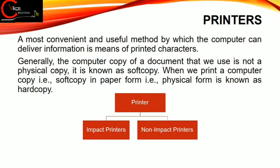Next we have to discuss about printers. A most convenient and useful method by which computers can deliver information is by means of printed characters. The copy of a document we see on the display is not a physical copy — you cannot hold it in your hands — and that's why it is termed as a soft copy. When we print a soft copy on paper, it is termed as a hard copy. For converting soft copy into hard copy we use a printer. Generally, we have two types of printers: impact printers and non-impact printers.